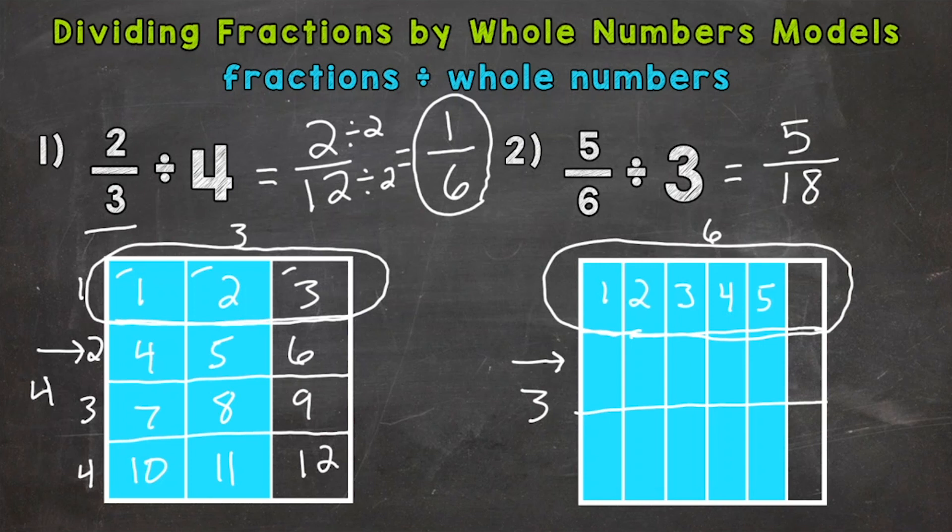Let's see if we can simplify. The only common factor between five and 18 is one. So this is in simplest form, and we are done. The answer is five-eighteenths.